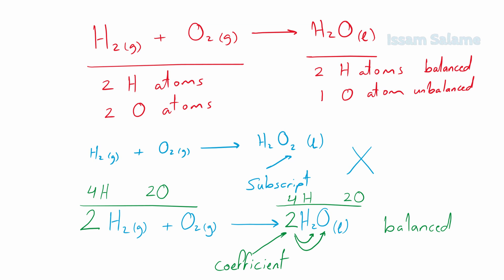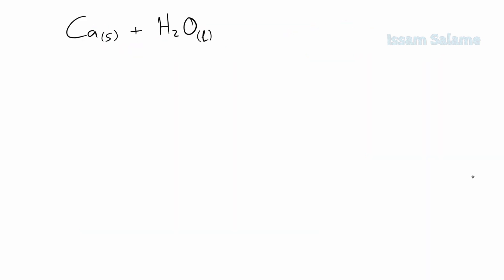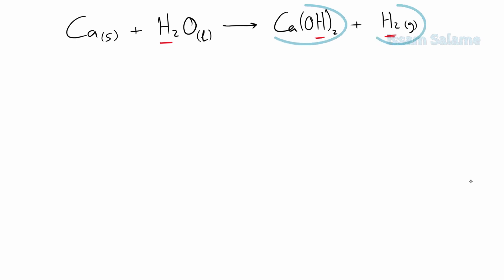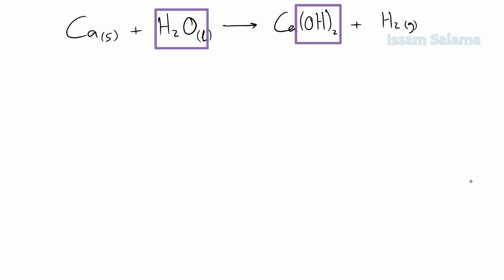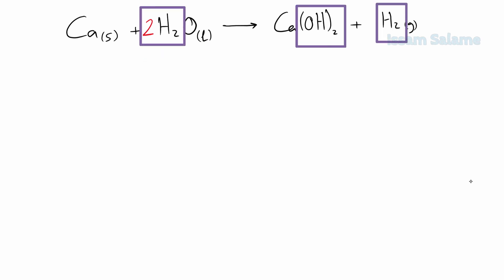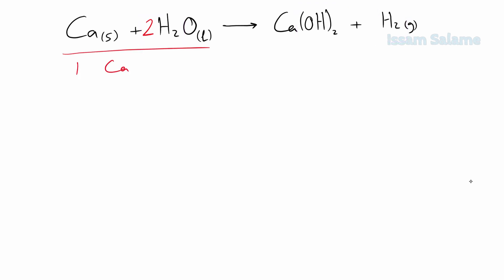Let's have another example: the reaction of calcium solid with liquid water to produce calcium hydroxide aqueous and hydrogen gas. My advice is to start balancing with atoms found only once on the reactant side and once on the product side. Hydrogen appears in two substances on the right side, so avoid starting with it. We have one calcium atom on both sides — balanced. We have two oxygen atoms on the right and only one on the left, so multiply the water molecule on the left by 2. Now we have four hydrogen atoms on both sides. The equation is balanced: one calcium, four hydrogen, and two oxygen atoms on each side.